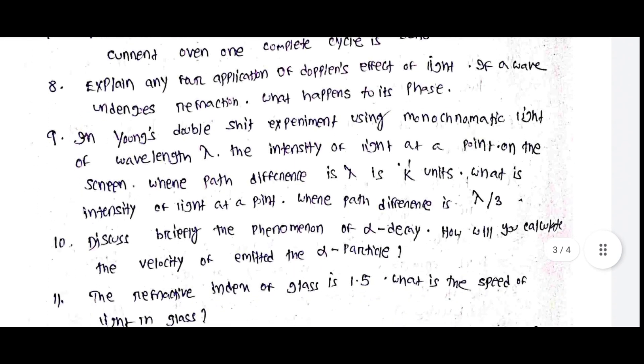In Young's double slit experiment, using monochromatic light of wavelength lambda, the intensity of light at a point on the screen where path difference is lambda is k units. What is intensity of light at a point where path difference is lambda by 3?